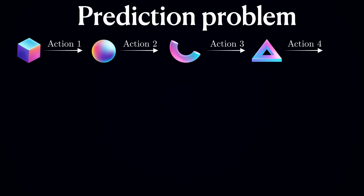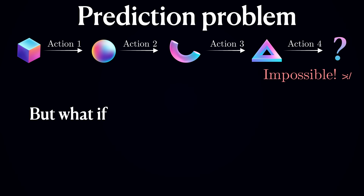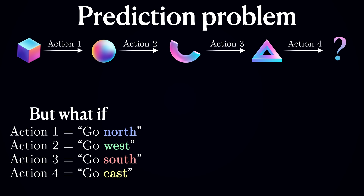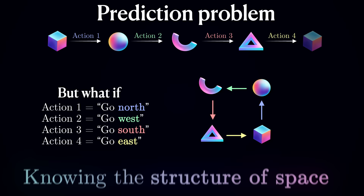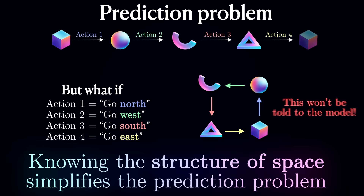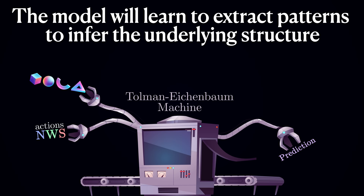For example, consider a sequence of observations and actions. Can you tell me what should be the next element? It seems impossible. However, what if I told you that actions 1 through 4 actually stand for directions north, west, south, and east? Now the task becomes much easier. Because you know the rules of how to chain these actions together, you can predict the next observation to be the same as the first one, since you essentially closed a loop. In other words, knowing the structure of space significantly simplifies the prediction problem. But the model would not know this underlying structure — instead, it would need to extract repeating patterns to infer the structure of the underlying world from sequences of observations and actions.